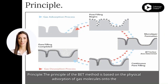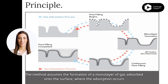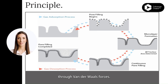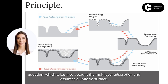The principle of the BET method is based on the physical adsorption of gas molecules onto the surface of a solid material. The method assumes the formation of a monolayer of gas adsorbed onto the surface, where the adsorption occurs through Van der Waals forces. The relationship between the quantity of gas adsorbed and the relative pressure is described by the BET equation, which takes into account the multilayer adsorption and assumes a uniform surface.